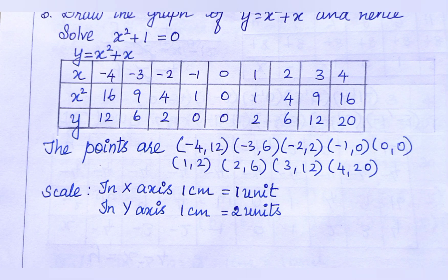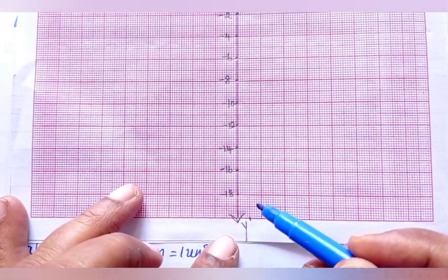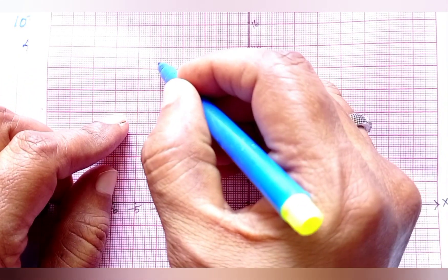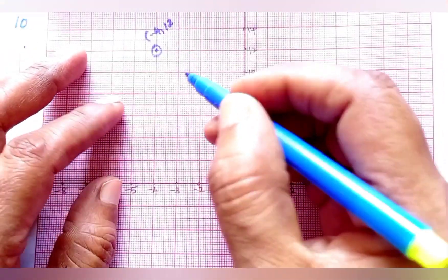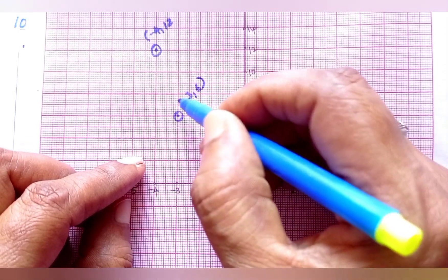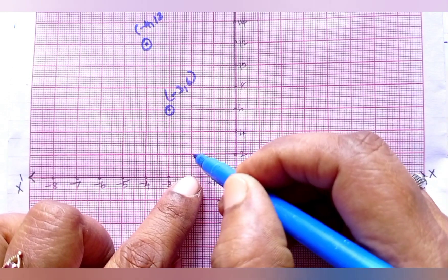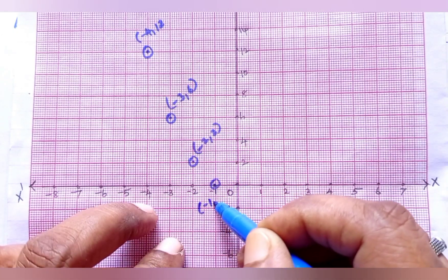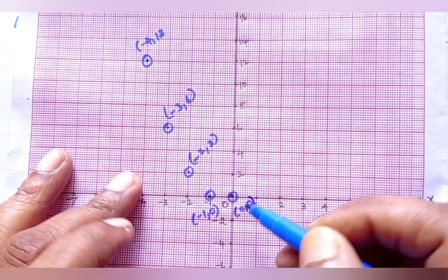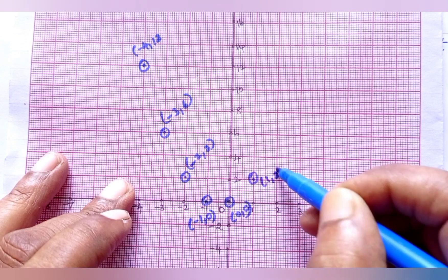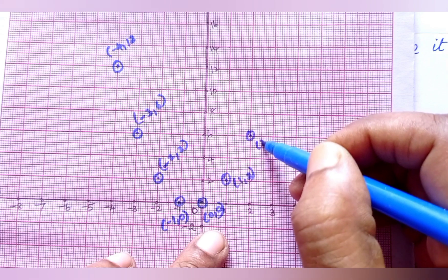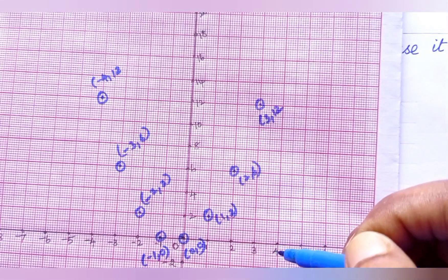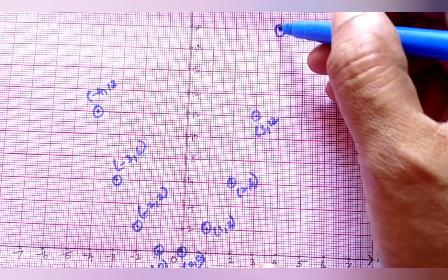Now we are going to draw the graph. This is x, this is x dash, here it is y dash and this is y. First point minus 4, 12. Next point minus 3, 6. Then minus 2, 2. Then minus 1, 0. Then 0, 0. Then 1, 2. Then 2, 6. Then 3, 12. Then 4, 20. We have plotted all the points on the graph.